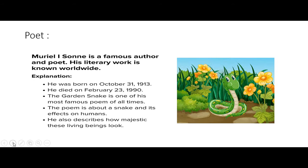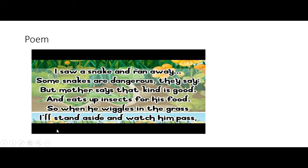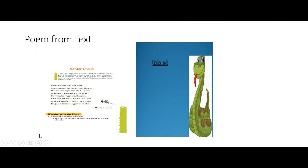You might have seen snakes in your storybooks, heard about them, or watched them in movies. The poem 'Garden Snake' is a simplistic description of a harmless snake. The young child is the narrator — he encounters a snake in the garden and runs away from it out of fear. However, his mother informs him that few snakes are not at all dangerous. These snakes merely feed on insects, which is what the poet's mother explains to her child.